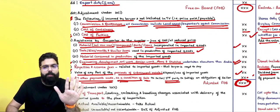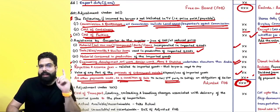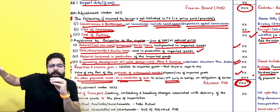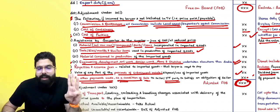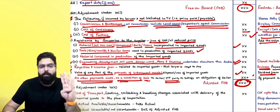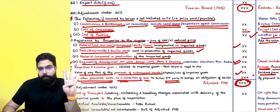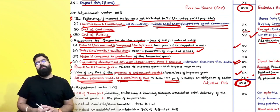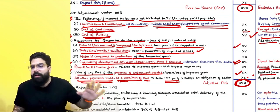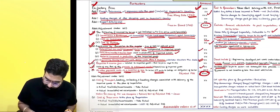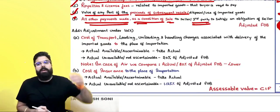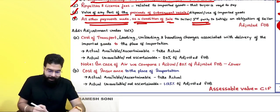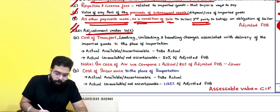Rule 10(1)(e): any other payment made as a condition of sale to the seller or a third party — including any obligation of the seller paid by the buyer — must be added. After applying Rule 10(1)(a) through (e) adjustments to FOB, you arrive at the adjusted FOB. Then apply Rule 10(2) adjustments.